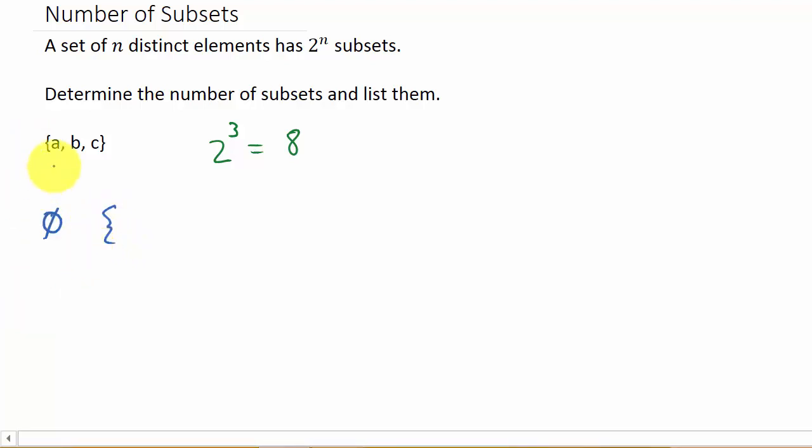All right, and then what I do is I just list each one of them individually. So we've got the set A, the set B, and the set C. So there's 3 subsets. And then we have the set A, B, and then the set A, C. Okay, so I've paired A with each one. Now let's do the B. So I've got the set B, C.